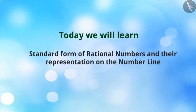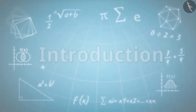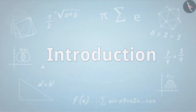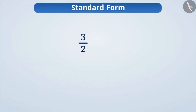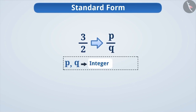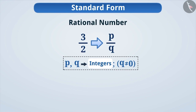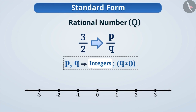Today, we will learn about the standard form of rational numbers and their representation on the number line. In the previous video, we learned that if a number can be represented as p by q, where p and q are integers and q is not equal to 0, then such a number is called a rational number. We denote them by capital Q. In this video, we will take the understanding of rational numbers further by understanding how to get the standard form of rational numbers and how to represent them on the number line. So, let's first understand how to get the standard form of rational numbers.